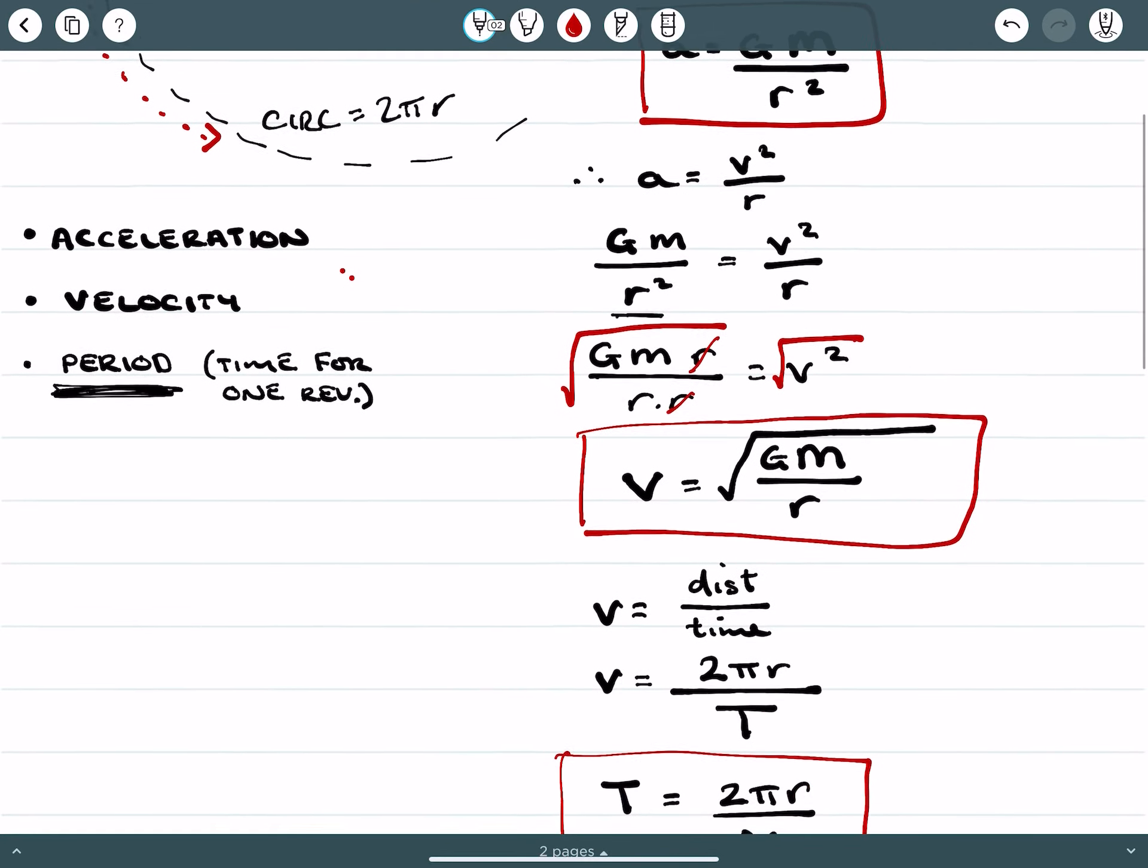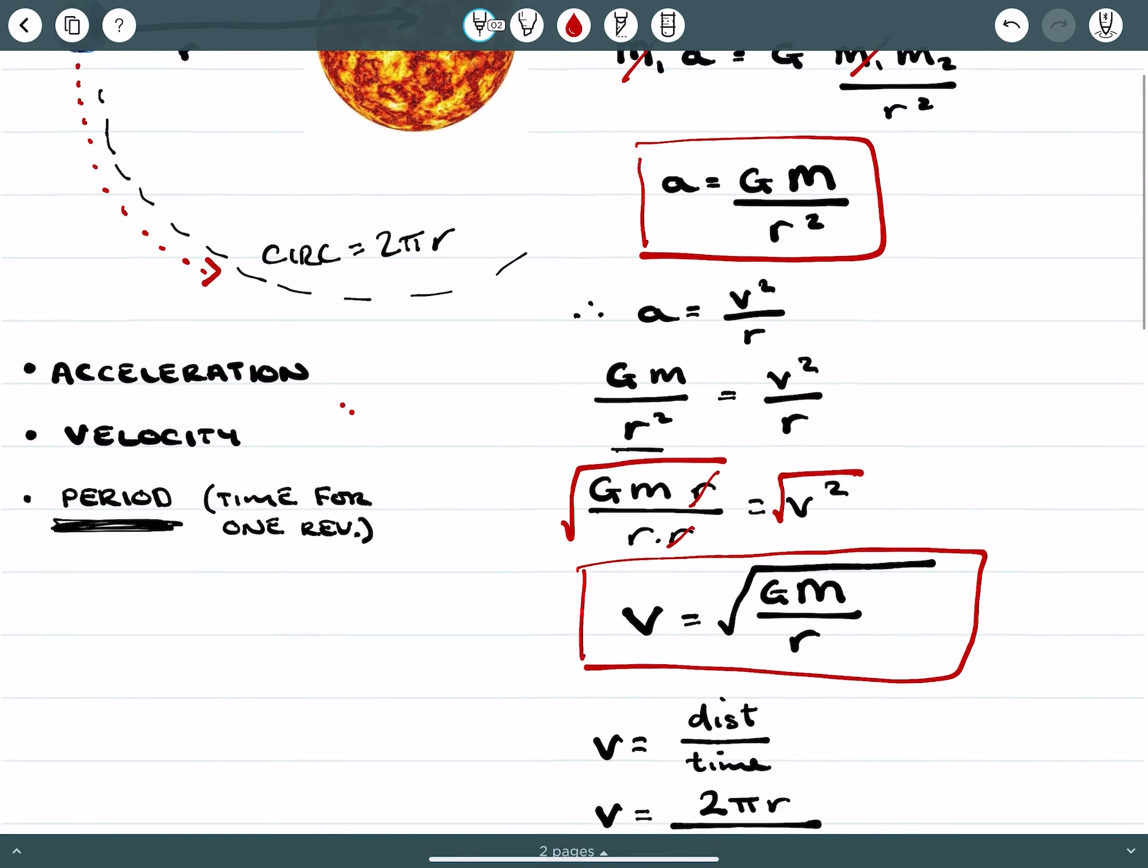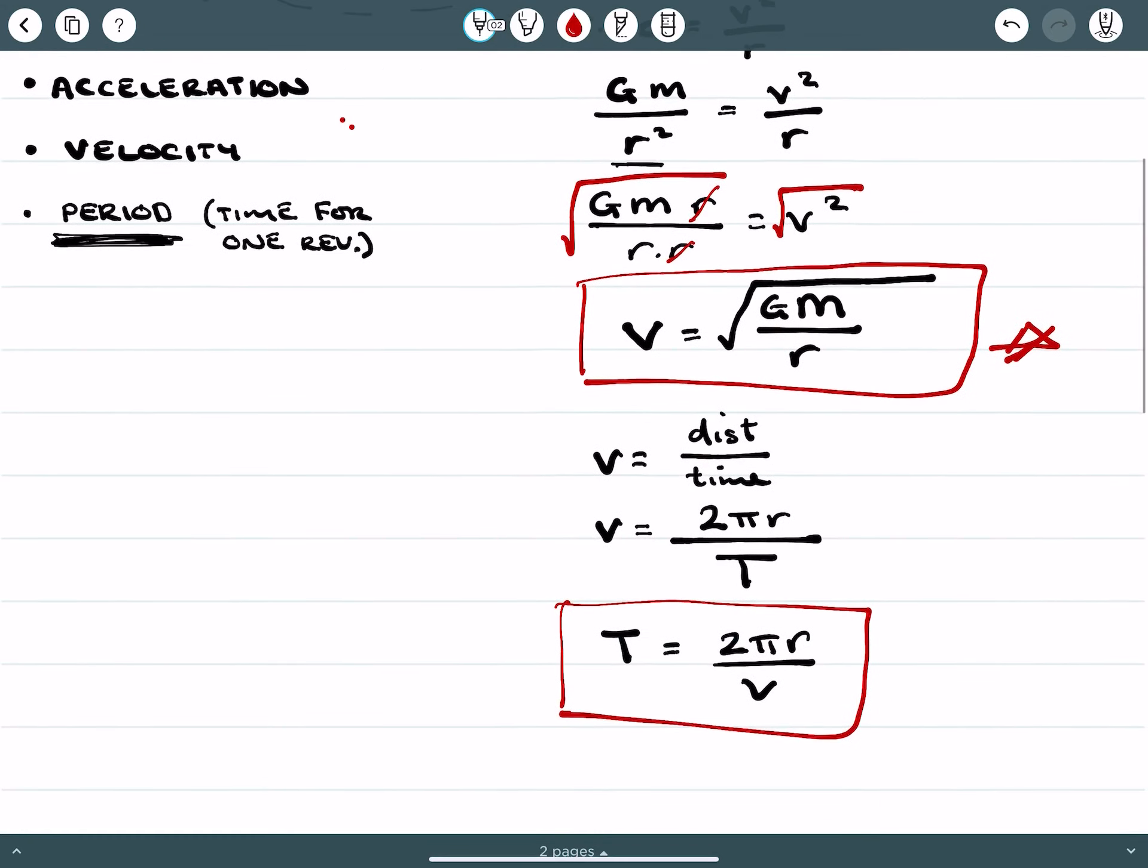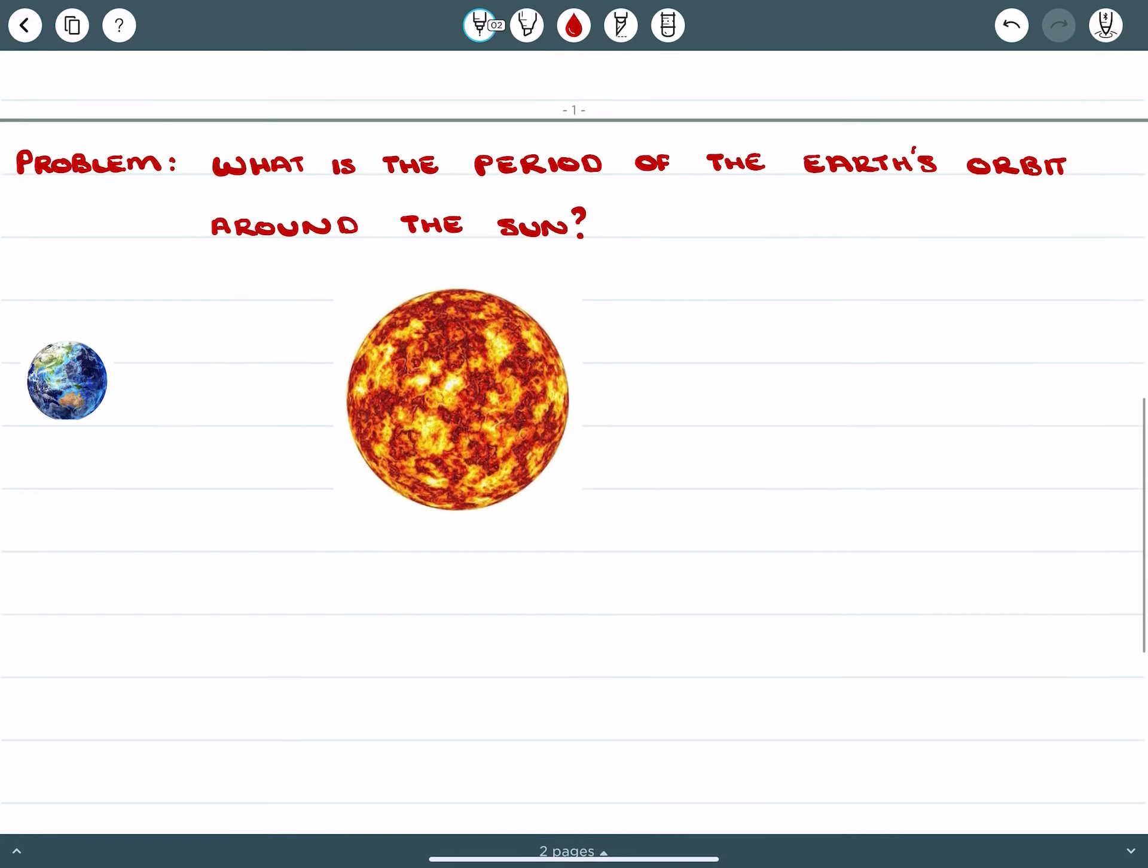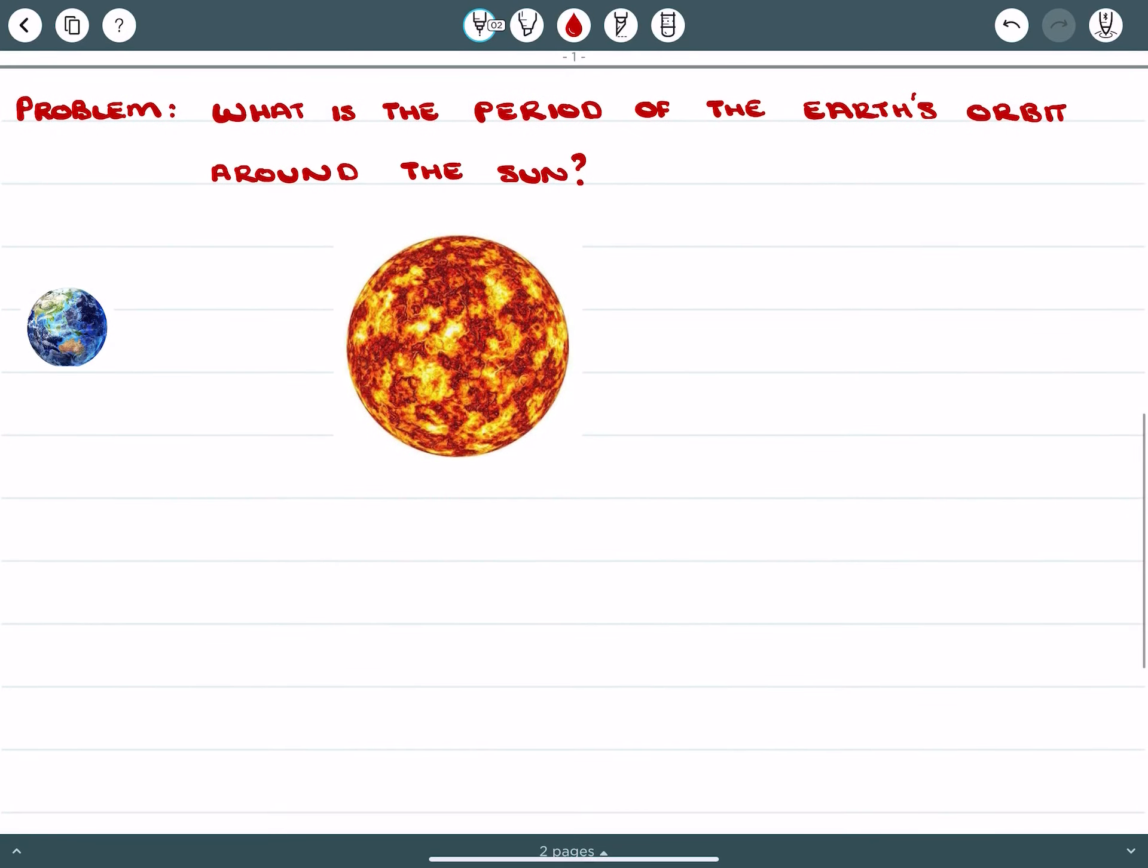So these three equations are really important for us to be able to describe different characteristics of the motion of the satellite or a body that's in orbit. So I want to have a look at an example that we're all aware of and it's based on a question.